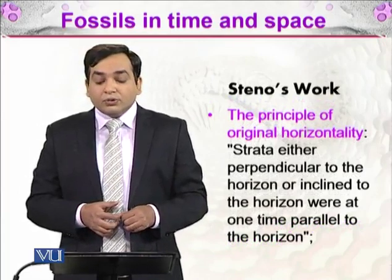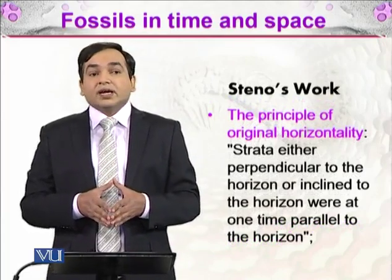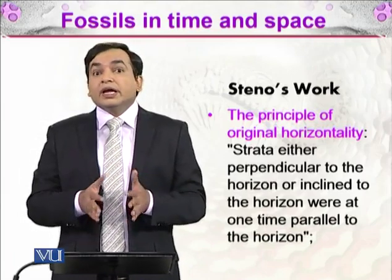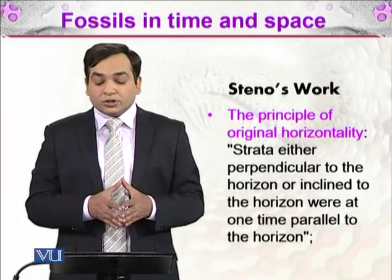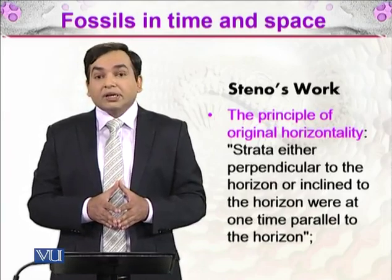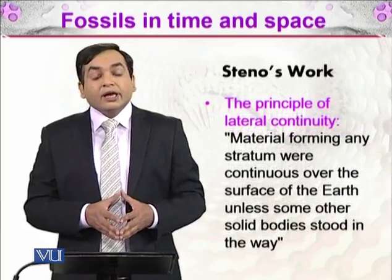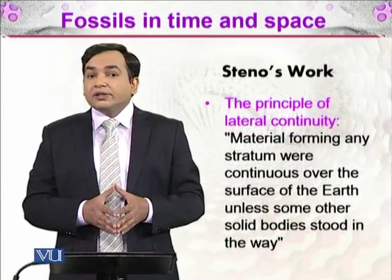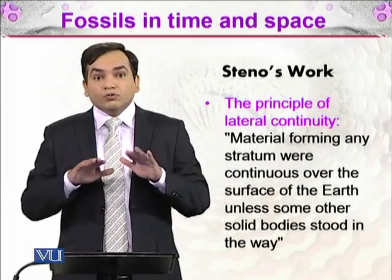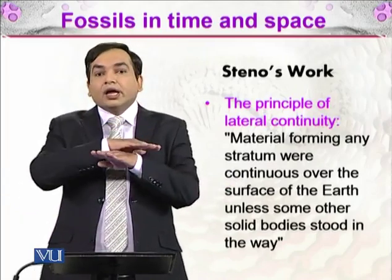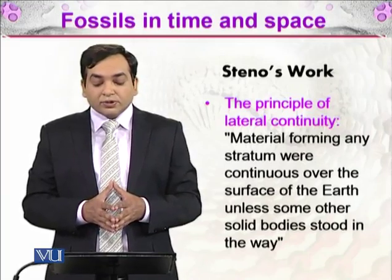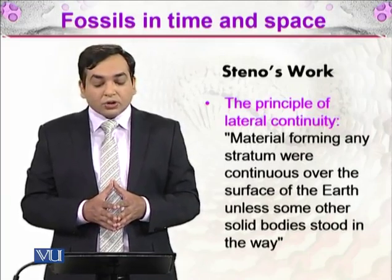Steno also gave the idea of original horizontality — all layers are formed in a horizontal position. If a layer is not horizontal now, it must have been horizontal in its original form. He stated that strata either perpendicular or inclined to the horizon were at one time parallel to it. He also gave the principle of lateral continuity, meaning a layer continues laterally beyond the field of view — it will go on and on.